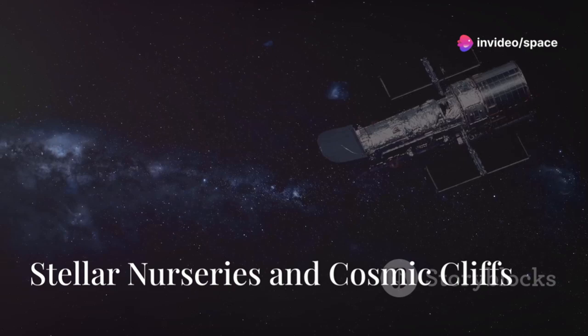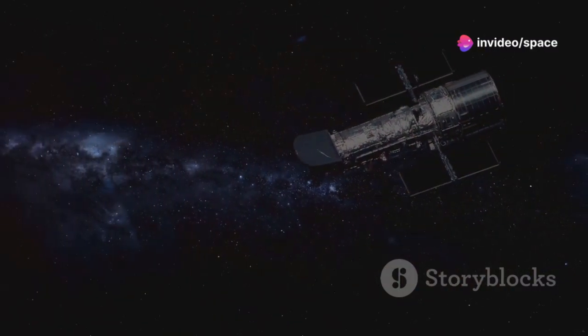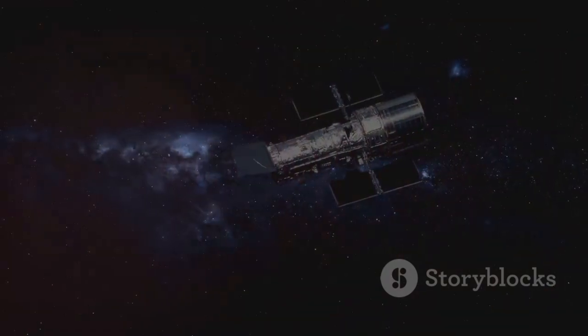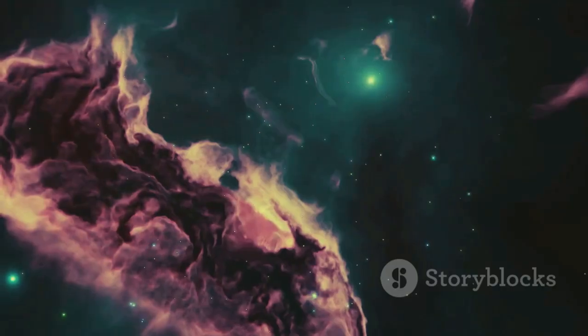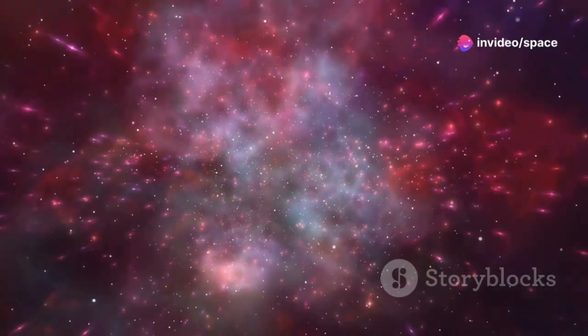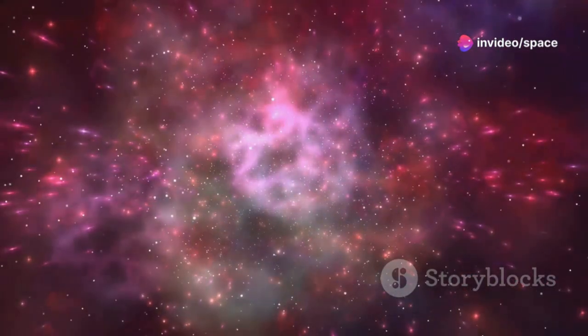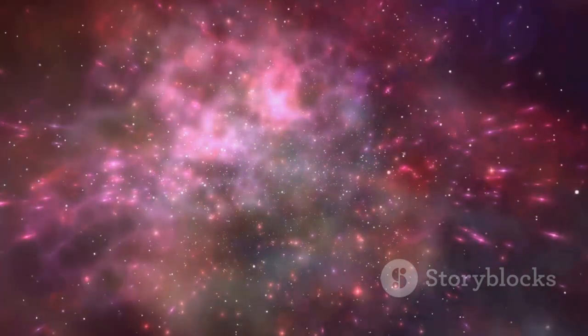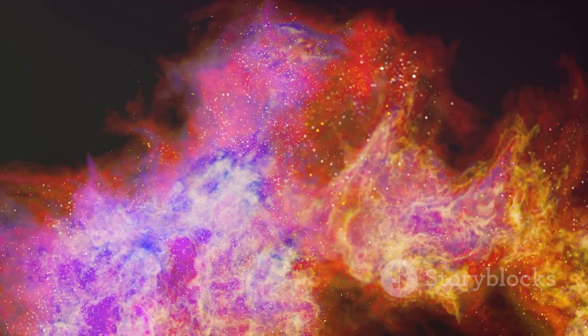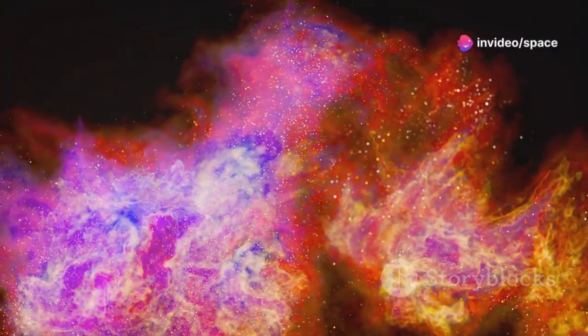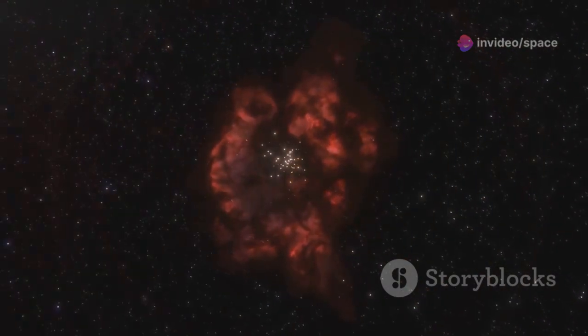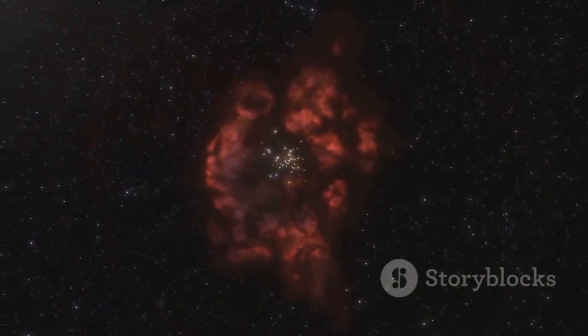Stellar nurseries and cosmic cliffs. In this section, we delve into the fascinating regions of space where stars are born and the breathtaking structures that form as a result of these cosmic processes. Stars are born in vast clouds of gas and dust known as nebulae. These stellar nurseries are the cradles of star formation, where the delicate balance of gravity and pressure gives rise to new stars. JWST's infrared vision allows it to penetrate these clouds and observe the processes of star formation in unprecedented detail. This capability is crucial because it lets us see through the dense clouds of gas and dust that would otherwise obscure our view.